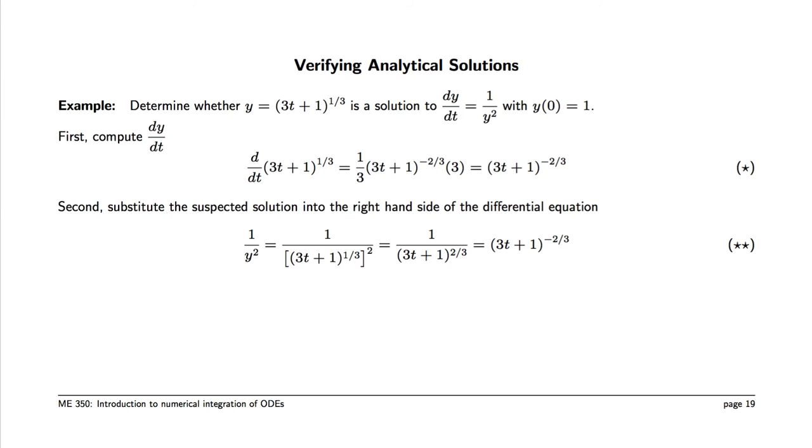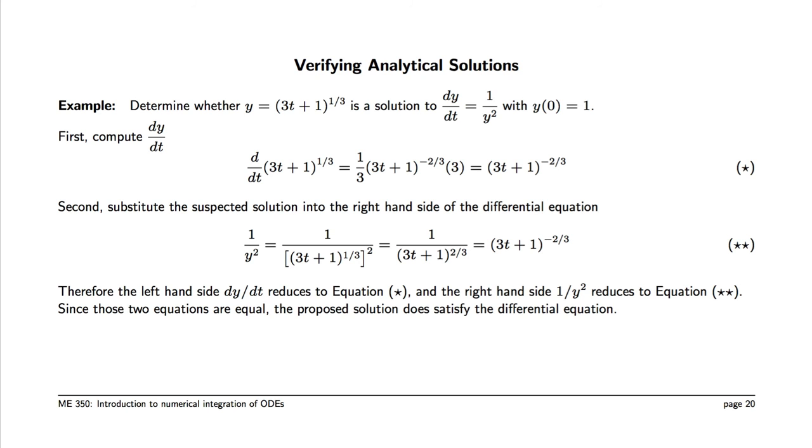We can then substitute our proposed solution into the right-hand side, 1 over y squared, and we also get the same equation, (3t + 1)^(-2/3). So when we substitute our proposed solution into the differential equation, the two sides agree, and we're confirming that this proposed solution does satisfy the differential equation.